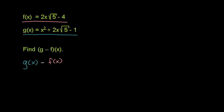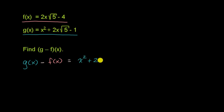Now let's work through this. We know that g minus f of x is equal to g of x minus f of x. So what is g of x? That's the same thing as x squared plus two x times the square root of five minus one.